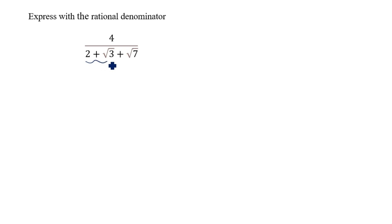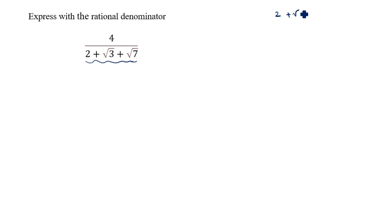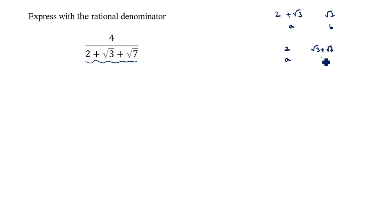You see the denominator has three terms, but we need only two terms to apply the rationalization formula. How will we split it into two terms? We will take either 'a = 2 plus root 3' and 'b = root 7', or 'a = 2' and 'b = root 3 plus root 7'.